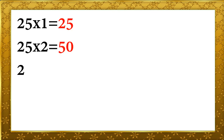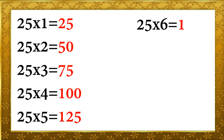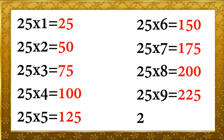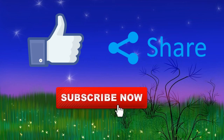25 ones are 25, 25 twos are 50, 25 threes are 75, 25 fours are 100, 25 fives are 125. 25 sixes are 150, 25 sevens are 175, 25 eights are 200, 25 nines are 225, 25 tens are 250. Now like, share and subscribe. Thank you.